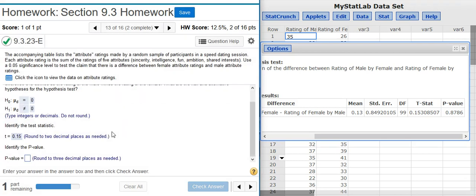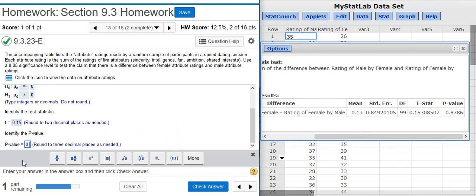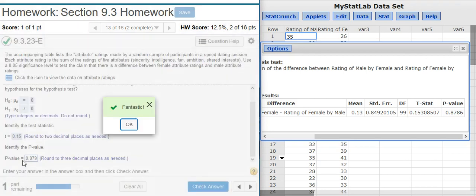The next part asks us to identify the p-value. The p-value is right here in the same table in the results window, next door to the test statistic. It's the last value in the table. I'm asked to round at three decimal places. Fantastic!